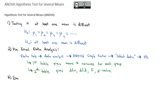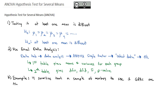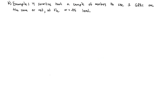Let's take a look at an example. There are four sororities that took a sample of members to see if their GPAs are the same or not. We'll test at the alpha equals 0.05 level. Sorority A had GPAs of 2.17, 1.85, 2.83, 1.69, and 3.33.